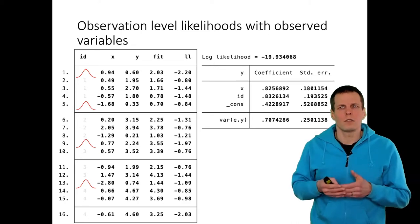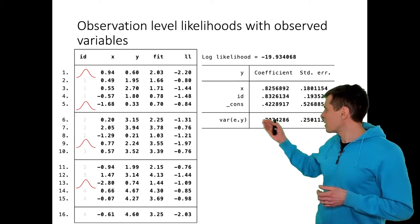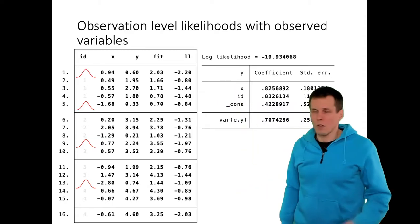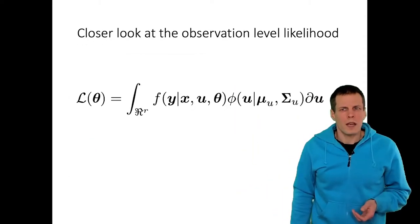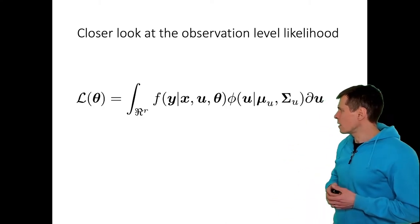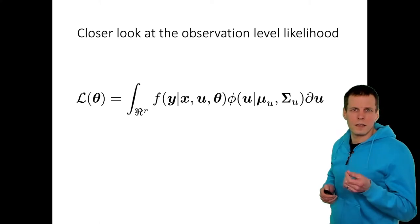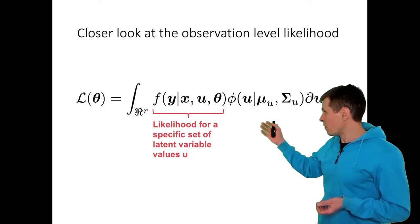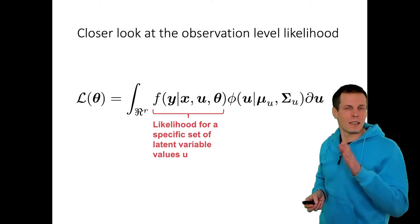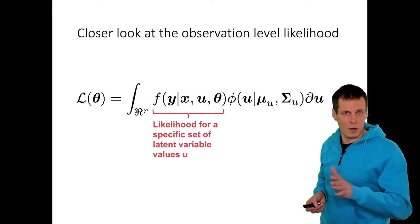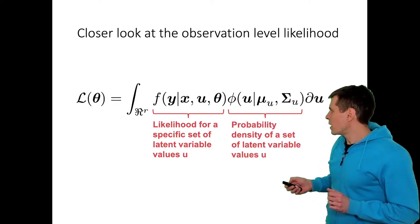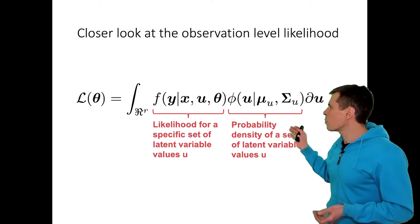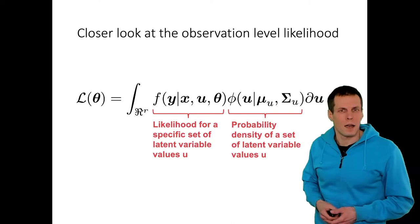Let's take a closer look at the observation-level likelihood. How would we calculate the log-likelihood for the first observation if we don't know the value of the cluster or group-level effect? According to the Stata documentation, we calculate the likelihood for an observation for a specific set of latent variable values u — assuming the latent variable has a specific value, say 0 — and multiply that by the probability density of those latent variable values.